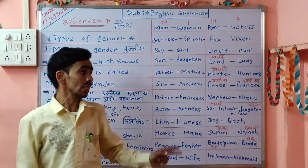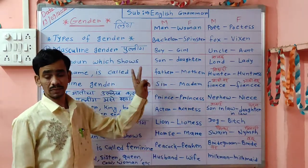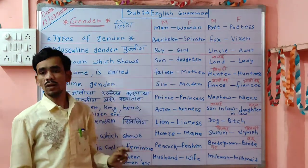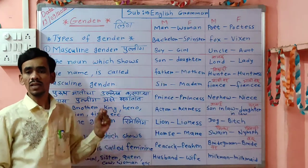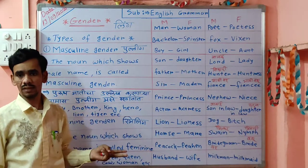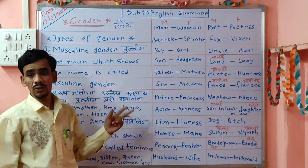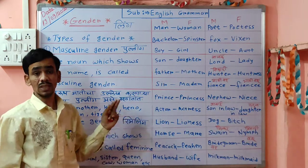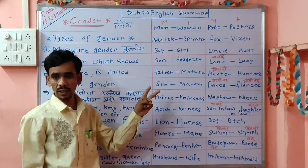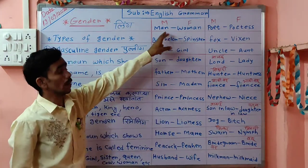Now we are going to see various examples and their opposite gender. M stands for Masculine and F stands for Feminine. Look at the board properly and listen carefully. So: man — opposite is woman. Man is masculine, woman is feminine.